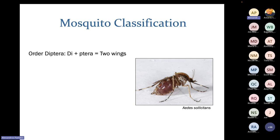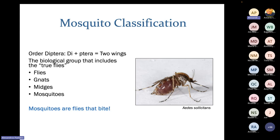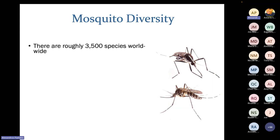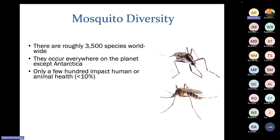Before we start, let's understand mosquitoes as a whole. Mosquitoes belong to the order Diptera, meaning two wings. This is the biological group that includes all true flies — so flies, gnats, midges, and mosquitoes. We can think of mosquitoes as flies that bite. There are roughly 3,500 species of mosquitoes worldwide, and they occur everywhere on the planet except Antarctica. But even though we have many different species, only a few hundred impact human or animal health.